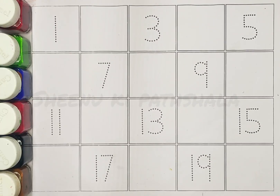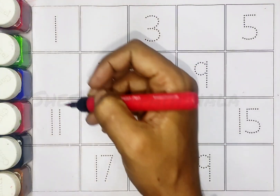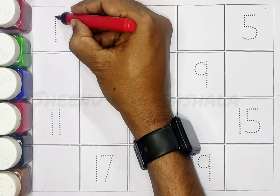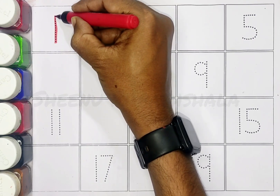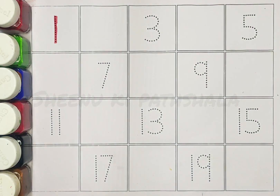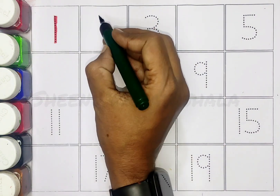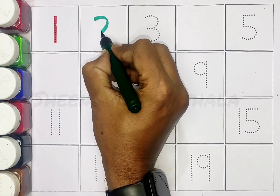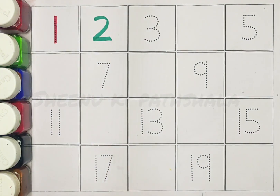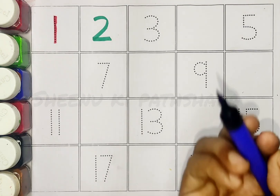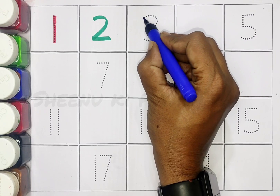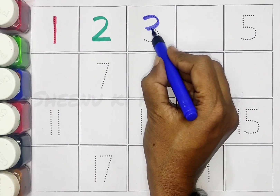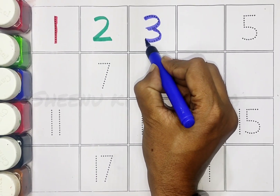Counting from 1 to 20. Let's start! Red color 1. Green color 2. Blue color...